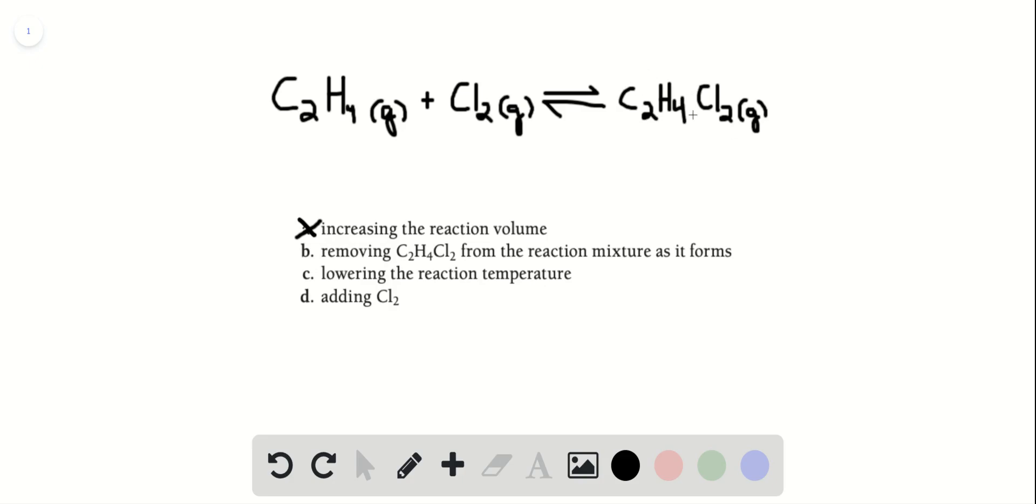So if you're removing product as the reaction is going, you're going to continually push the reaction towards the product. And so B, removing C2H4Cl2, will shift it towards C2H4Cl2, and you would increase the amount you obtain. So B would be a way we could maximize our yield.